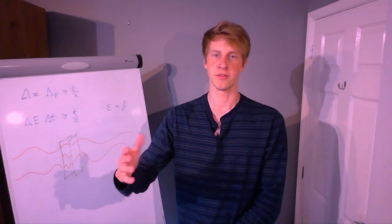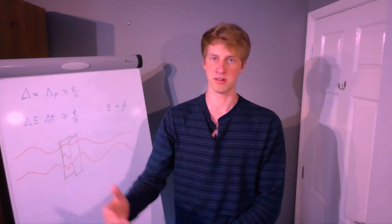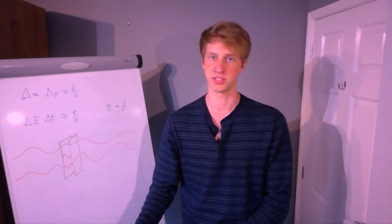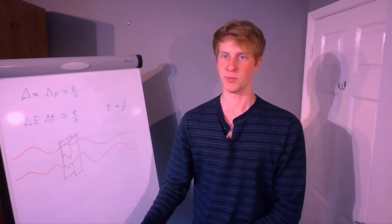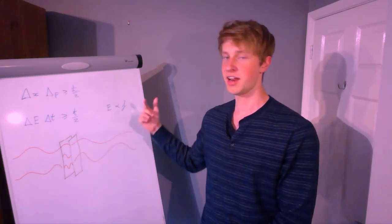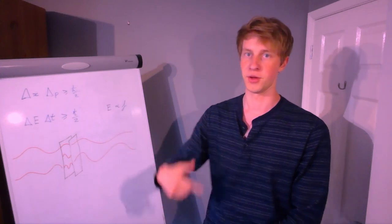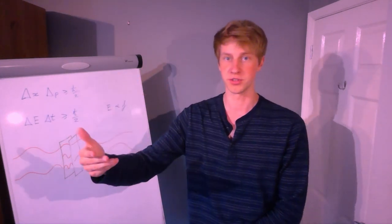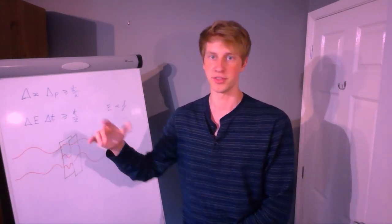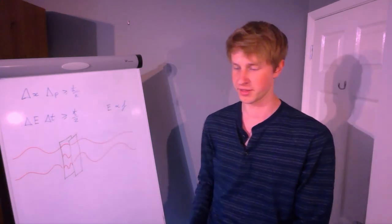These waves in the vacuum, which have energy which we're unable to measure, are known as quantum vacuum fluctuations. And we know in physics that the energy of a wave corresponds to its frequency, so therefore these quantum vacuum fluctuations have the usual properties of a wave: frequency and wavelength.